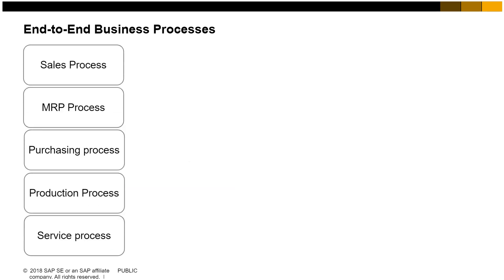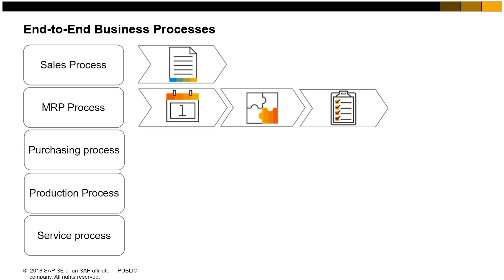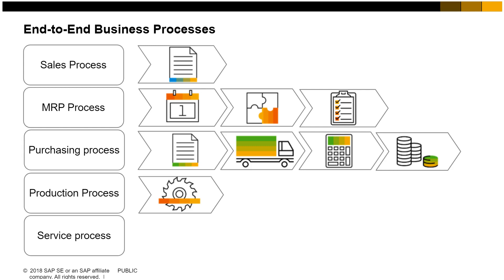Let us consider an example from a small business showing how SAP Business One provides integration among business processes. Customers order custom-built personal computers. Materials Requirement Planning, MRP, is run to determine what is needed to meet the customer demands. From the MRP results, production orders are created to build the computers. Materials are purchased for the components of the computer using the procurement process — purchase order, goods receipt PO, and AP invoice.